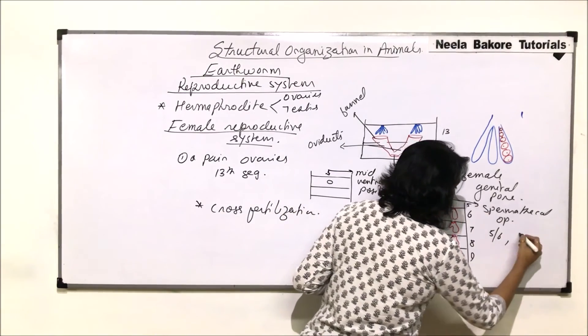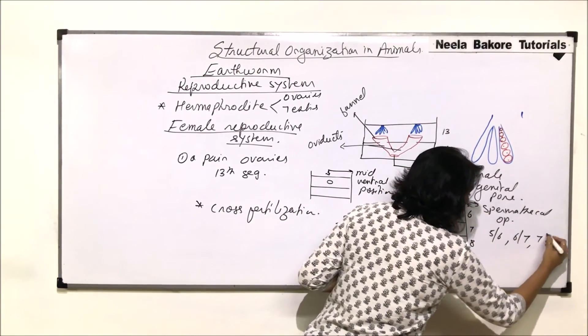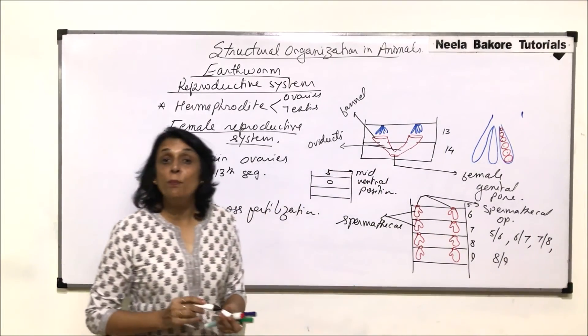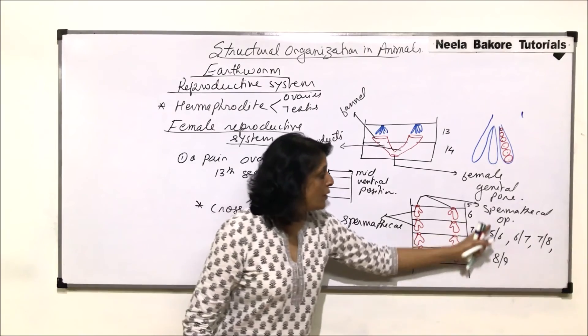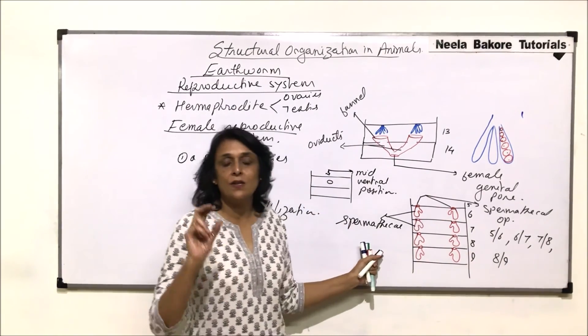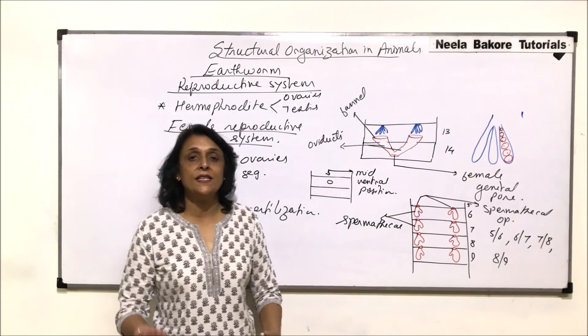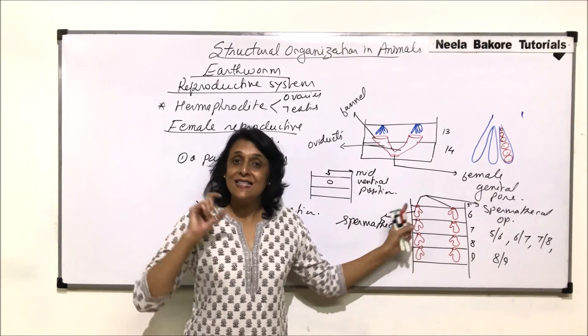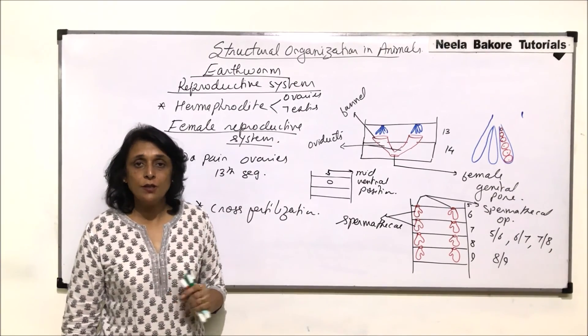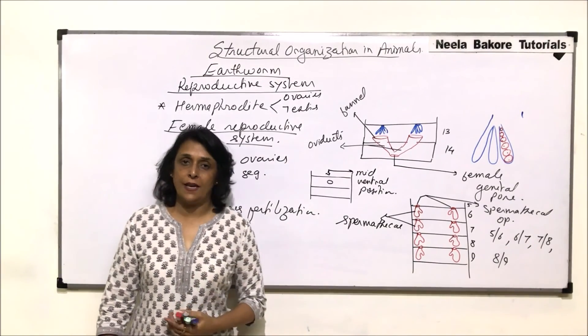This is the fifth segment. The next one is six-seven, then seven-eight, and eight-nine. This is how the openings are. Spermathecal openings are on the septa, whereas the structure, the sac-like spermathecae, are present inside the segment. Now what exactly happens during copulation? That we will discuss in the next part.